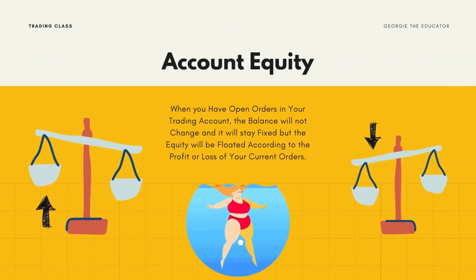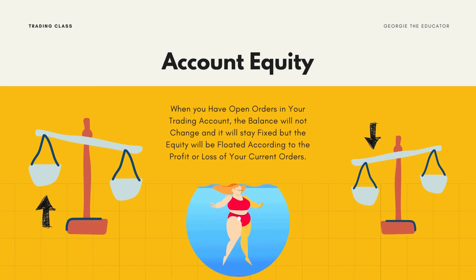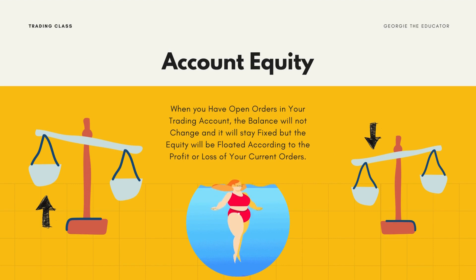Account equity, on the other hand, is a floating balance whenever a trader has any open positions before closing them. Say, for example, you have a buy position and you are at a $20 loss. Your account equity will be $100 less $20 — you'll have an account equity of $80.